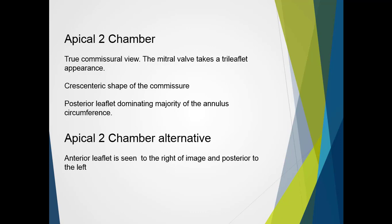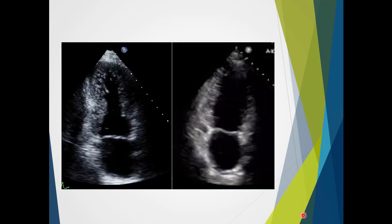The anterolateral papillary muscle is removed by rotating counterclockwise, and then we see the anterior leaflet on the right of the image and posterior to the left. This is an oblique view obtained through the mitral valve, showing the inferior wall and the true anterior wall. We can see both papillary muscles associated with the commissure view — the medial portion of the posterior leaflet, the mid portion of the anterior leaflet, and the lateral portion of the posterior leaflet. As we rotate further, we lose the anterolateral papillary muscle and the valve assumes the typical two-leaflet view again.